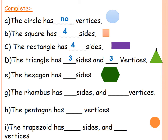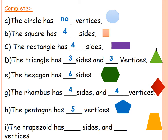The hexagon — what is the hexagon? Here is a hexagon. It has: 1, 2, 3, 4, 5, 6 — hexagon has six sides. The rhombus has how many sides and how many vertices? Here is a rhombus — it has four sides and four vertices. The pentagon has how many sides? Here is a pentagon: 1, 2, 3, 4, 5 — it has five sides and five vertices. The trapezoid has how many sides and how many vertices? Here is a trapezoid — it has four sides and four vertices.